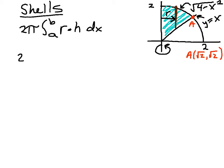This becomes 2π times the integral. So r is just x times - and now the height will just be the distance from here to here. That's just going to be top takeaway bottom, which is an idea we're familiar with. So that'll be the top, which is √(4-x²), minus the bottom, which is x, and then dx.